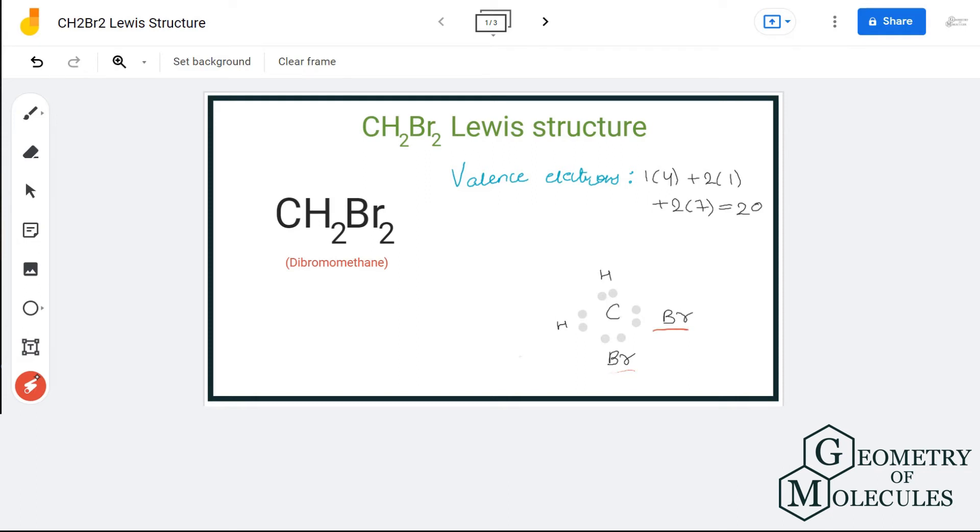As we are left with 12 more electrons, we will place 6 electrons around this bromine atom and the remaining 6 around this bromine atom. Doing that we will be using up all our 20 valence electrons, and this is the Lewis structure for CH2Br2.